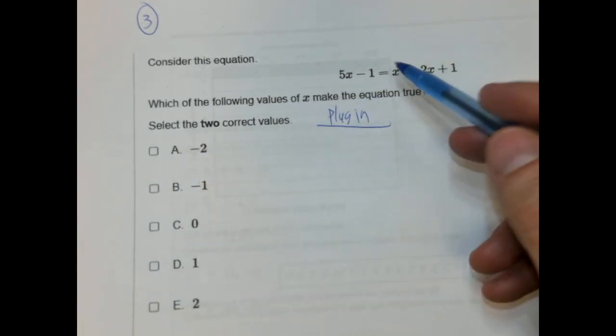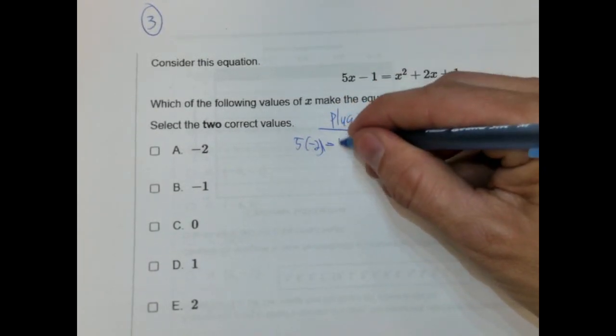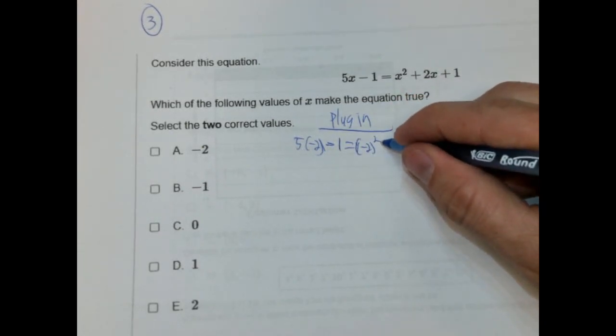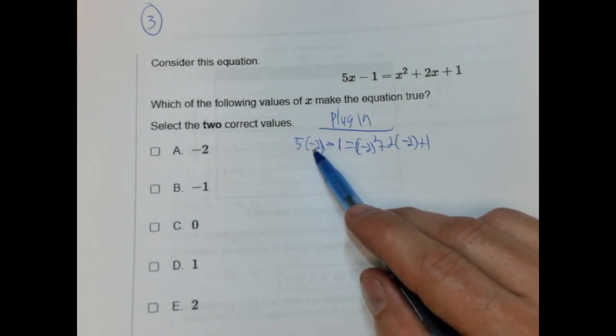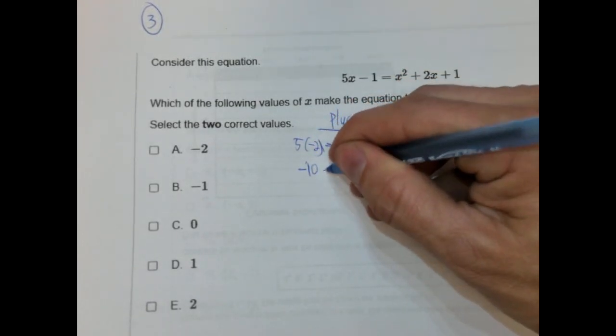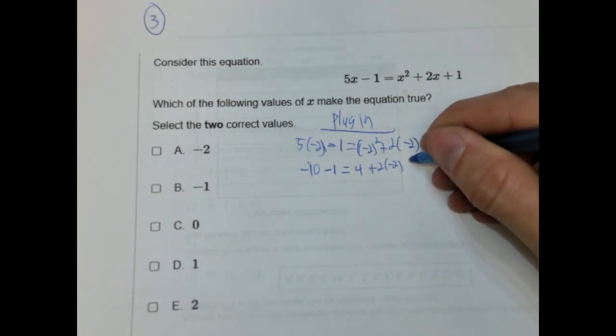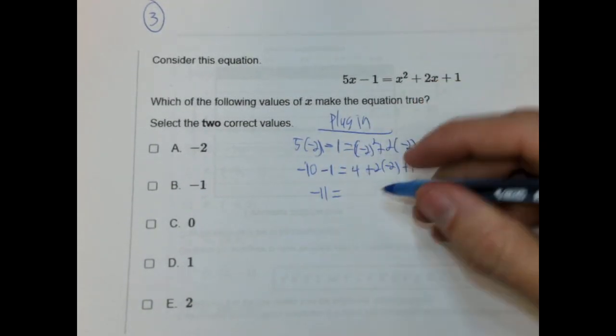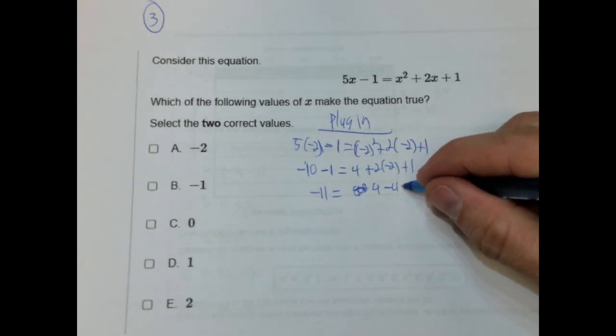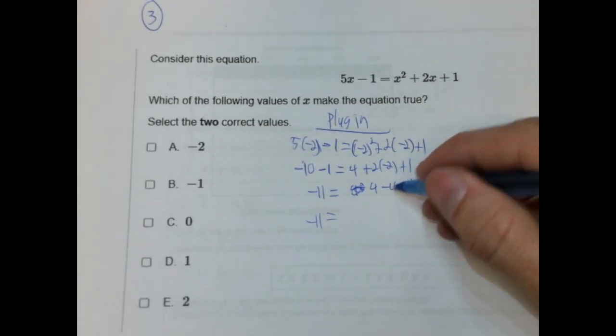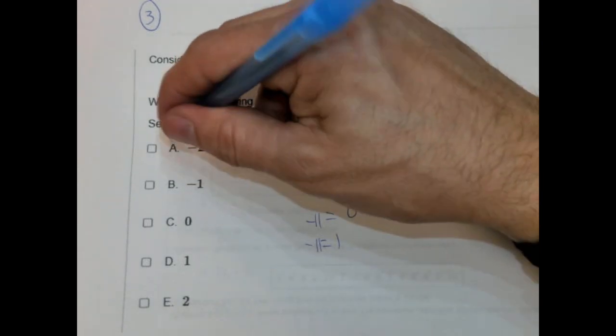Let's do the plug-in method first. So let's go ahead and pick one. So negative 2. So plug that in. So we're going to have 5 times negative 2 minus 1 equals negative 2 squared plus 2 times negative 2 plus 1. And we just see if this is a true statement or not. So this comes down to order of operations here. So 5 times negative 2 is negative 10. Negative 2 squared is 4. And then plus 2 times negative 2 plus 1. Negative 10 minus 1 is negative 11. 4 minus 4 because 2 times negative 2 is negative 4. Negative 11 equals, and then 4 minus 4 is 0 plus 1 is 1. So negative 11 equals 1, which is obviously not true. So this is out.